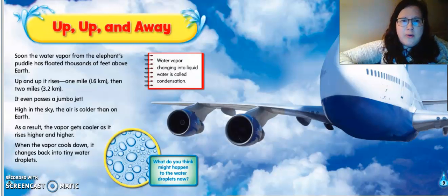Soon, the water vapor from the elephant's puddle has floated thousands of feet above the earth. Up and up it rises one mile, then two miles. It passes a jumbo jet. High in the sky, the earth is colder than on earth. As a result, the water vapor gets cooler as it rises higher and higher. When the water vapor cools down, it changes back into tiny water droplets. So when water vapor changes into a liquid, it's called condensation. What do you think might happen to the water droplets now? So we have these water droplets and they're inside of a cloud. And this part of the water cycle is condensation.